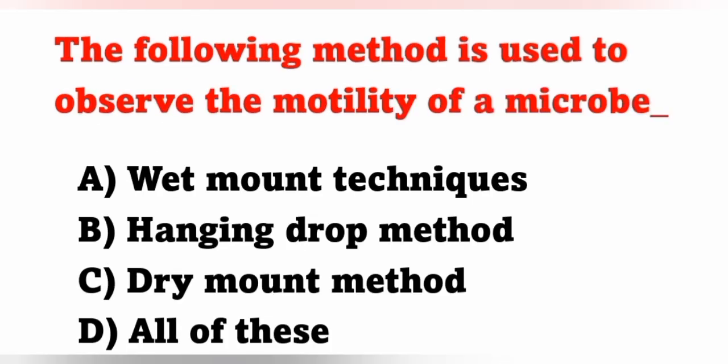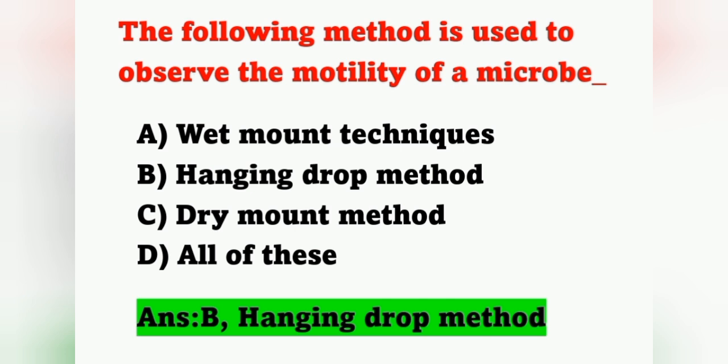Next question: the following method is used to observe the motility of a microbe — option A: wet mount technique, option B: hanging drop method, option C: dry mount method, option D: all of these. Which method is used to observe the motility of a microorganism? It is the hanging drop method. Option B is the correct answer.